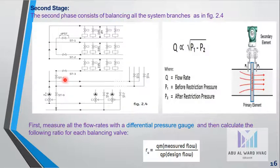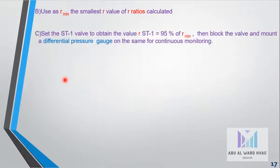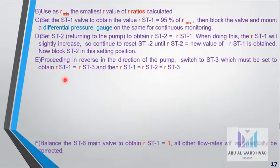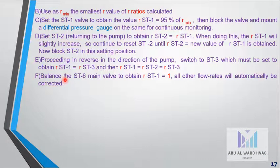When we reach this stage, there is one important step: to balance the ST6 main valve to obtain R_ST1 = 1, so all other flow rates will automatically be corrected. The branches of all other columns can be equally matched.